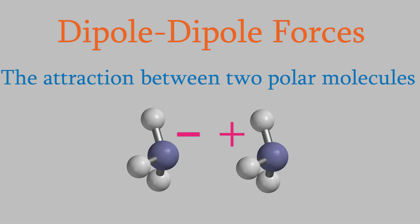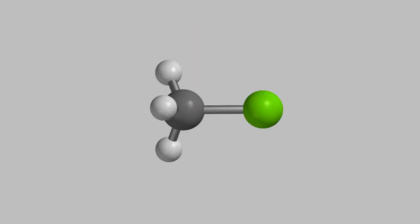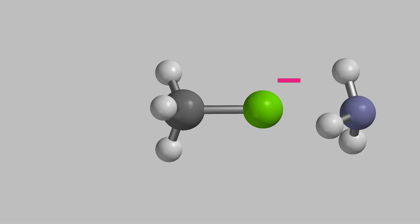Dipole-dipole forces can also occur between molecules of two different compounds. For example, here's a chloromethane molecule — it's asymmetric, so it's a dipole. The negatively charged side is where the chlorine is, so this side of the molecule is attracted to the positively charged end of an ammonia molecule. The other end of chloromethane will be attracted to the negative side of an ammonia molecule.